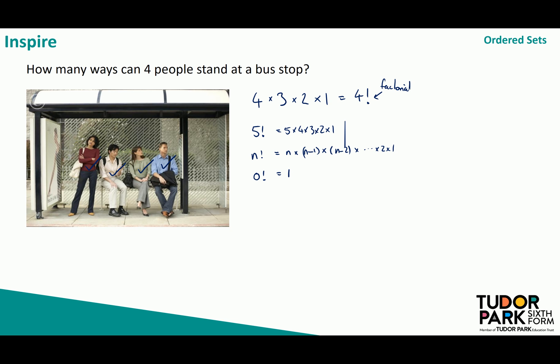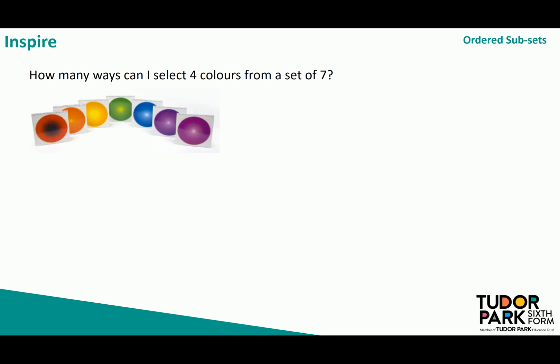Factorial is a very useful way for working out the number of different arrangements that we have of a set of objects. But what if I didn't want to arrange all of the objects? What if I only wanted a subset? So what if I wanted to arrange four of the colours from a set of seven?